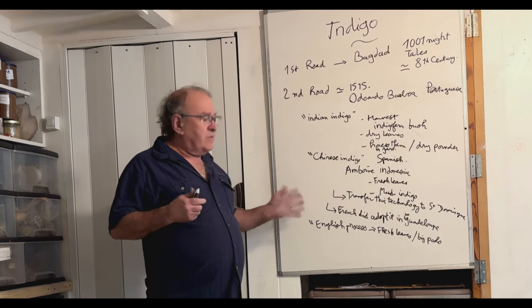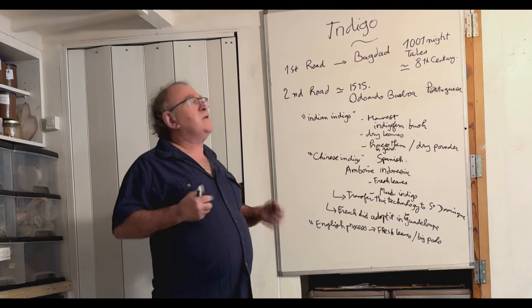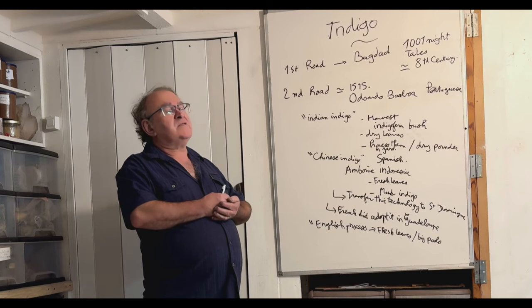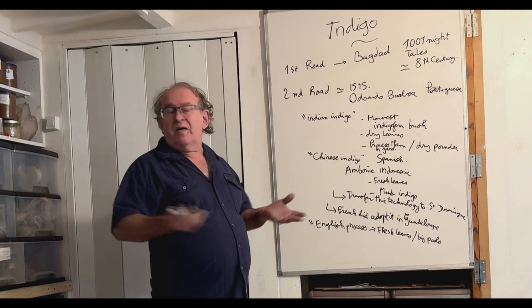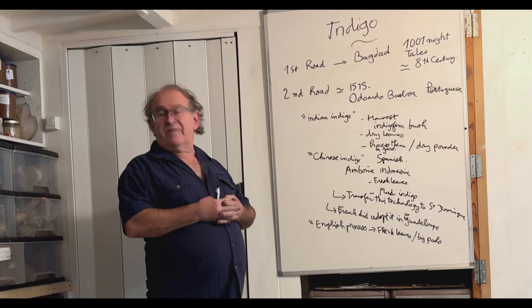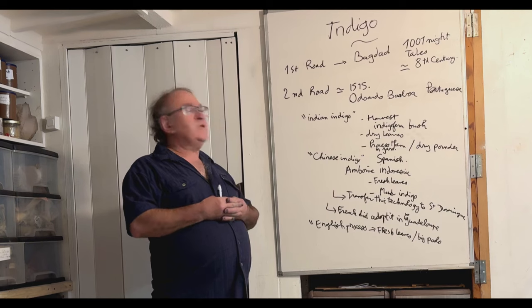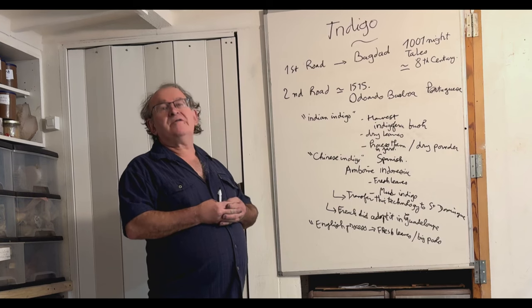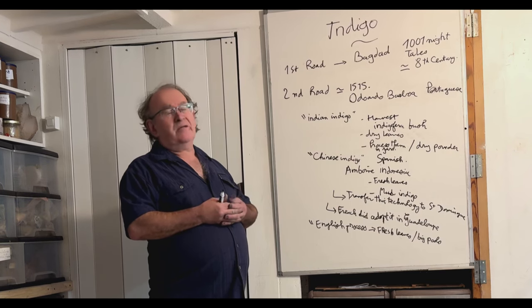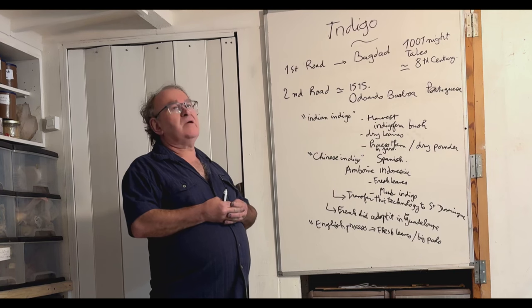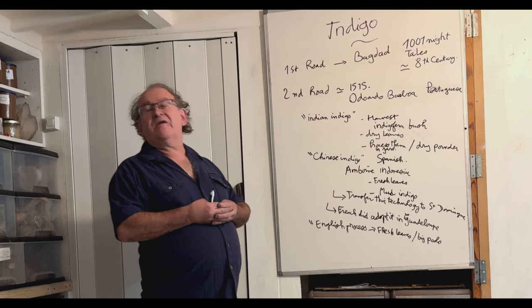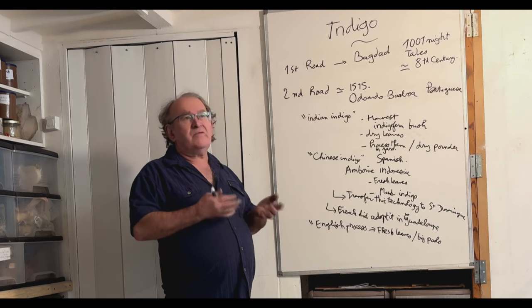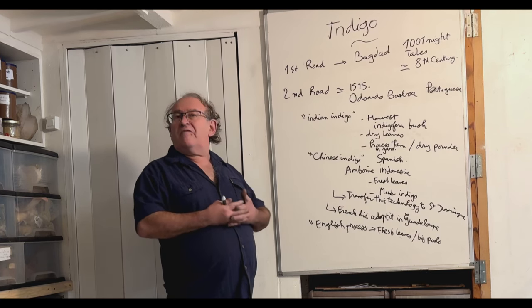When French people discovered the Chinese culture, they were extremely impressed, and they started during the 18th century to write real encyclopedias of Chinese culture. So the priests, they were Catholic priests, and then mentioning everything they discovered in China. And some of them, Father Sibo, who is working in Beijing at the time, is mentioning five to six different indigo plants. So at the time we could consider that China was the country with the most extended culture of indigo.